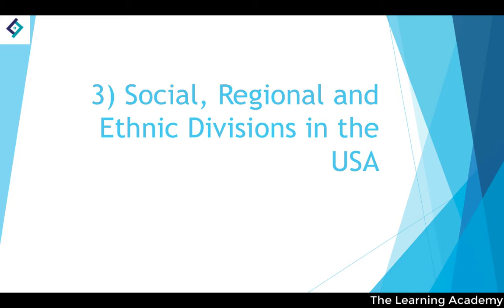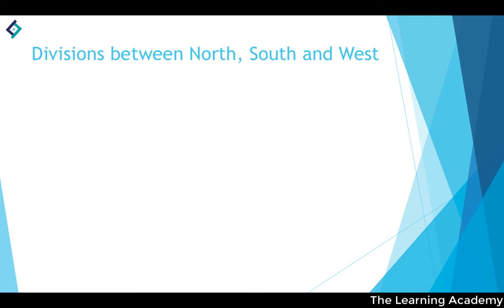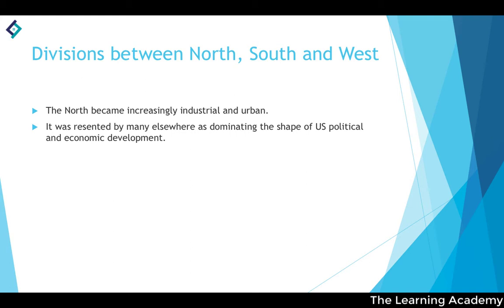There were significant social, regional and ethnic divisions in the USA after the Civil War. The North became increasingly industrial and urban, and was resented by many elsewhere for dominating US political and economic development. It was felt that politicians represented northern views too heavily, while the South and West were underrepresented in the federal government.